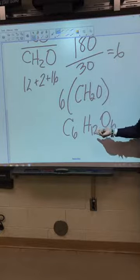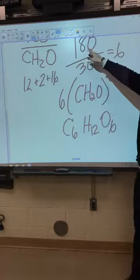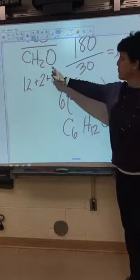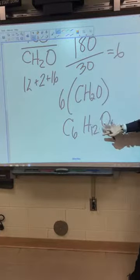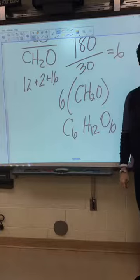If you take 180 and divide it by 30, you get 6. So, that tells me that when it was reduced, it was reduced by 6. So, I'm going to take that 6 and say CH2O and multiply the whole thing by 6. So, C6H 6 times 2 is 12O6. Hey, that's what we started with, glucose. So, that's how you get the molecular formula.